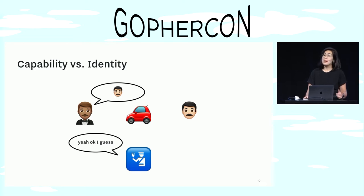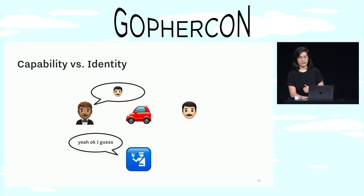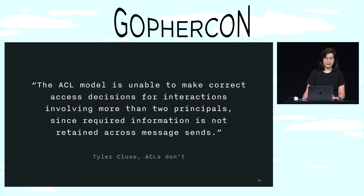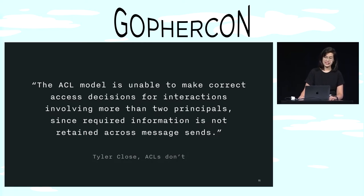But there's a bigger problem here too. Relying on identity can be dangerous in any system where there are more than two principals, like multiple services. This is outlined very thoroughly in a paper called ACLs Don't, which concludes that the ACL model is unable to make correct access decisions for interactions involving more than two principals, since required information is not retained across message sends.